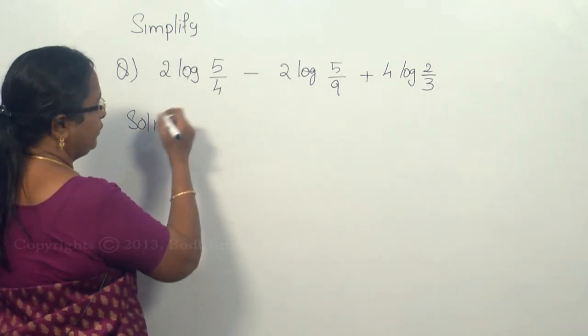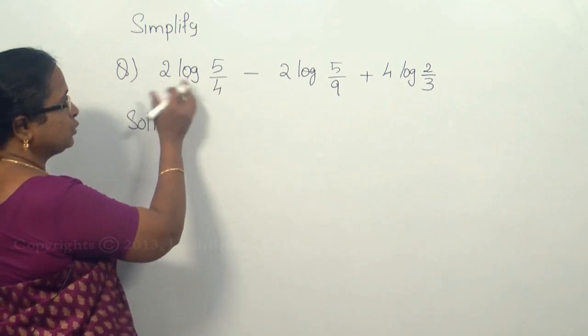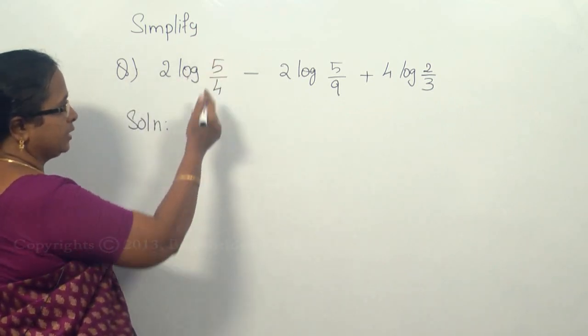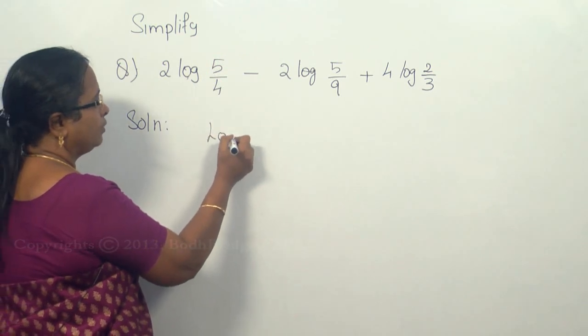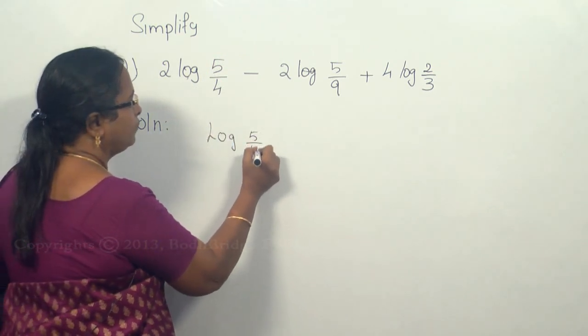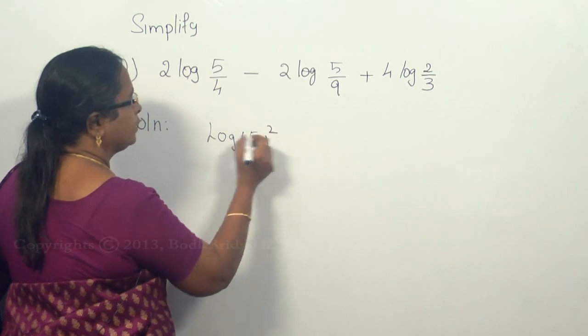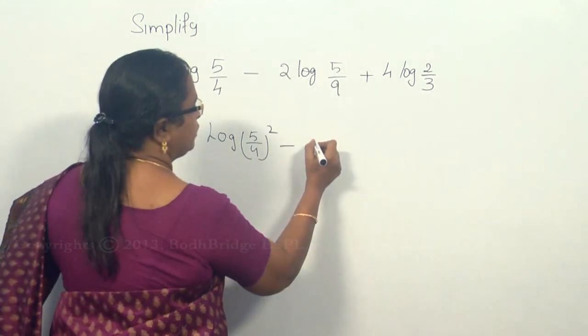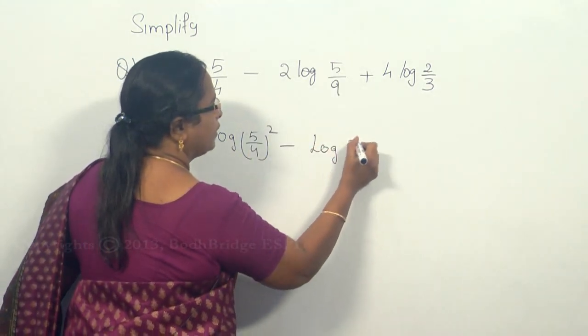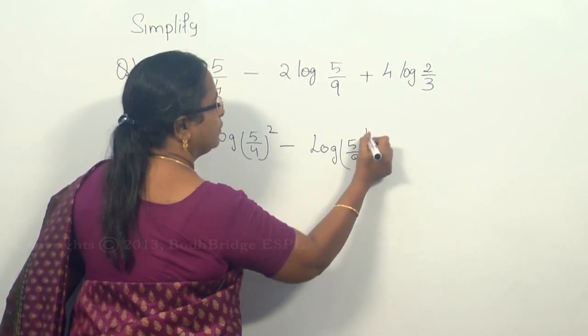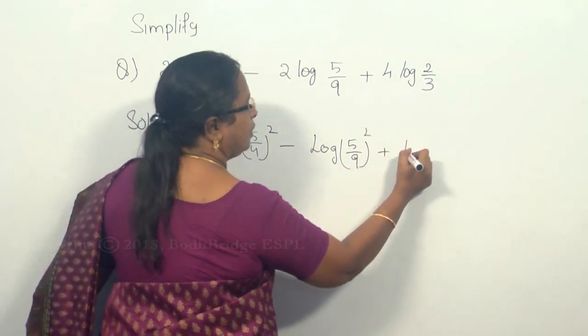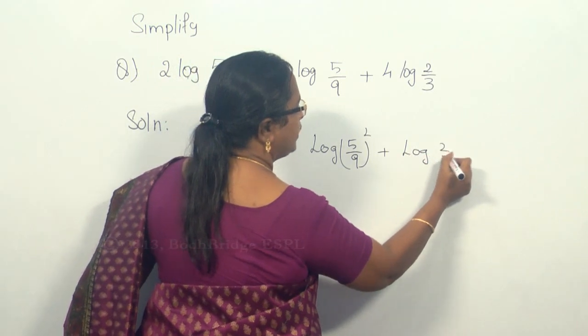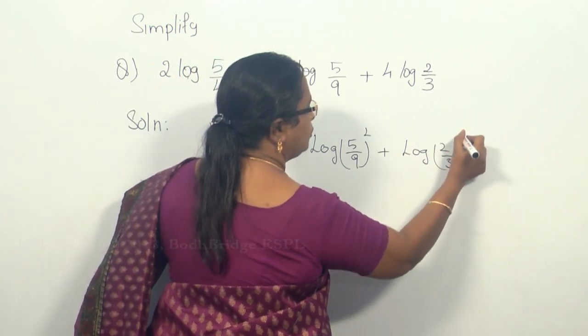While solving, now we will use the rules which I already explained. So this 2 which is outside I can bring it inside. So this will be log of (5/4) the whole square, minus again these 2 I have to bring it inside, so log of (5/9) the whole square plus log of (2/3) the whole power 4.